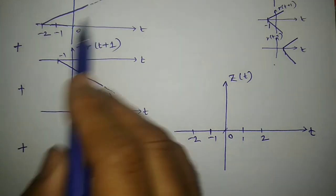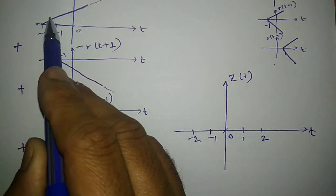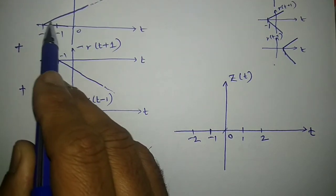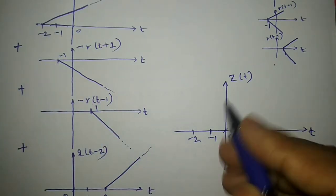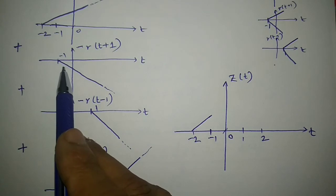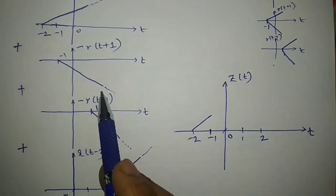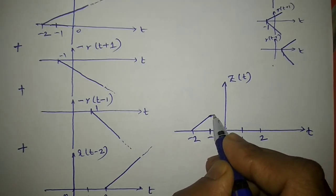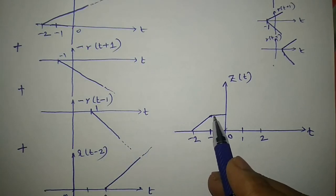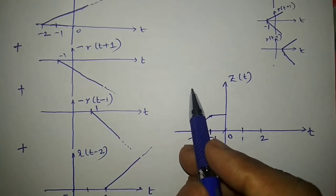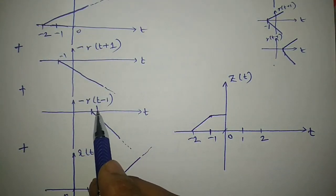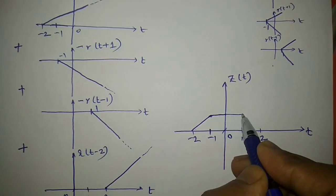Starting from the very first signal which begins at minus 2, the shape of the signal is something like this. From minus 2 to minus 1, this is the only signal being added, all others are zero, so I get that ramp shape. At minus 1, I am getting a new signal. One is trying to increase and the other is trying to decrease — it neither increases nor decreases. It stays at that point, and these are the only two signals acting till position 1.